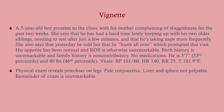Let's take a look at a vignette. A five-year-old boy comes into the clinic with his mom complaining of sluggishness for the last two weeks. She says he's had a hard time keeping up with his siblings, needs to rest a lot, and is taking a lot of naps. Yesterday he told her he hurts all over. His appetite has been normal and review of systems is otherwise unremarkable. Vitals: blood pressure 101/60 (normal), heart rate 140 (a little high), respirations 25 (pretty normal), temperature 101.9 (febrile). Physical exam reveals petechiae on the legs, pale conjunctiva, liver and spleen not palpable.